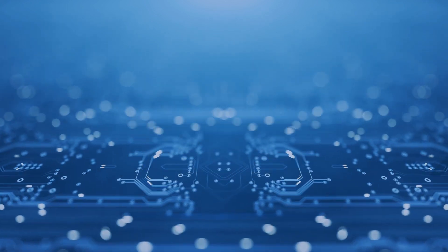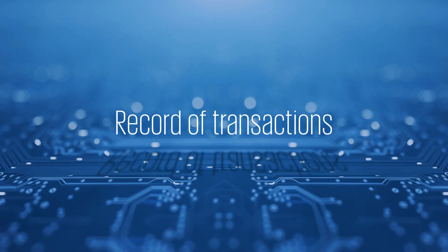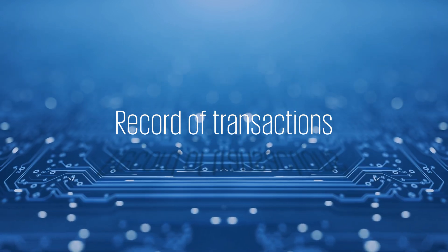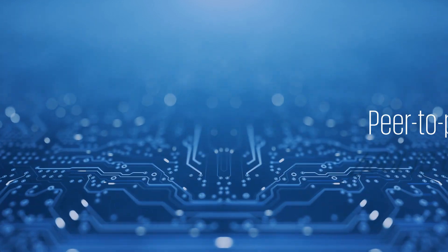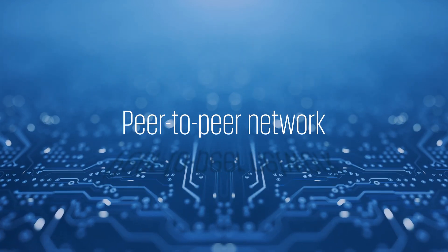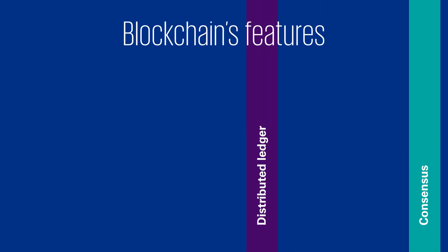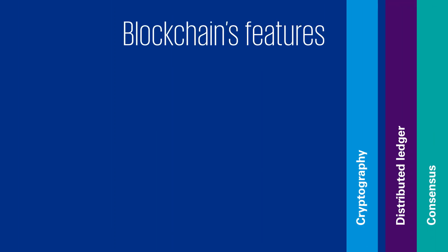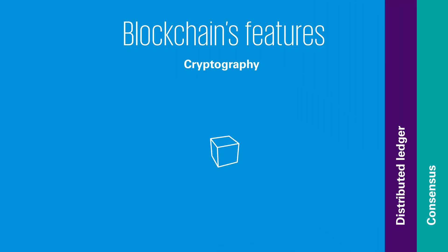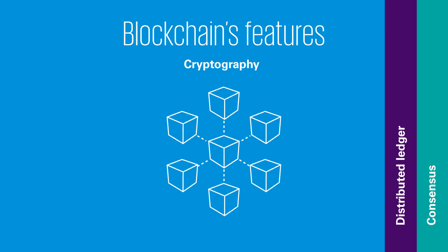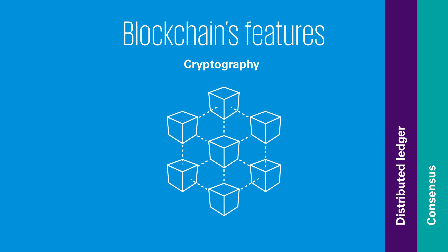Simply speaking, a blockchain is a system in which a record of transactions is maintained across multiple computers called nodes, that are linked in a peer-to-peer network. Let's go through the core components, starting with cryptography.